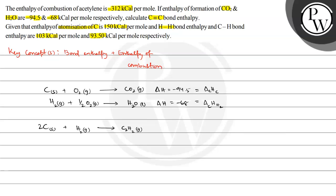For this reaction, we can calculate the enthalpy of reaction using: ΔH = summation of enthalpy of combustion of products minus summation of enthalpy of combustion of reactants. This equals the enthalpy of combustion of acetylene, which is minus 312, minus the combustion enthalpies of the reactants carbon and hydrogen.